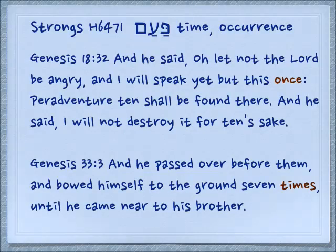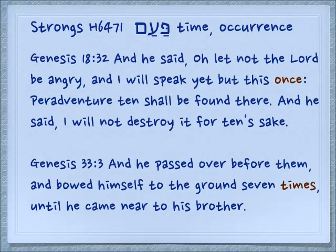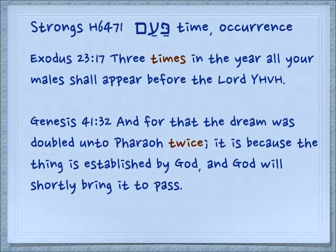When we talk about the occurrence of things — one time or two times — we have a different word: 'pa'am.' Genesis 18:32: 'Let not the Lord be angry, and I will speak yet this once — pa'am — one time. Peradventure, ten shall be found there. And he said, I will not destroy it for ten's sake.' Genesis 33:3: 'And he passed over before them, and bowed himself to the ground seven times — seven occurrences — until he came near to his brother.' Exodus 23:17: 'Three times in the year, all your males shall appear before the Lord, Yehovah' — Passover, Pentecost, and Tabernacles.